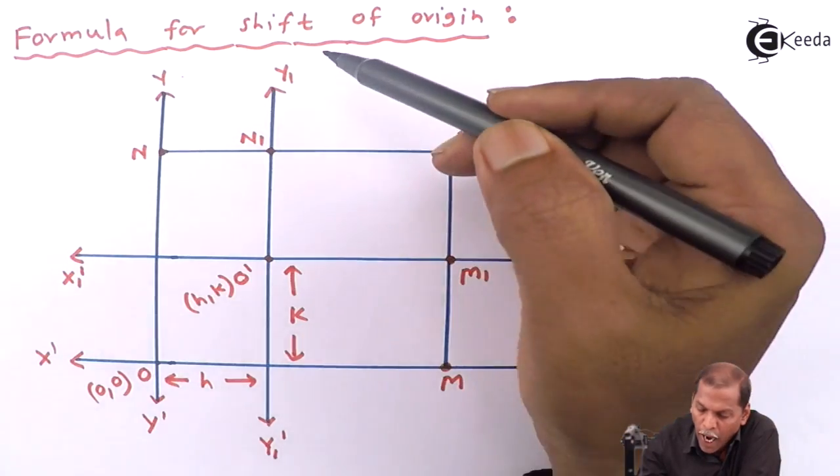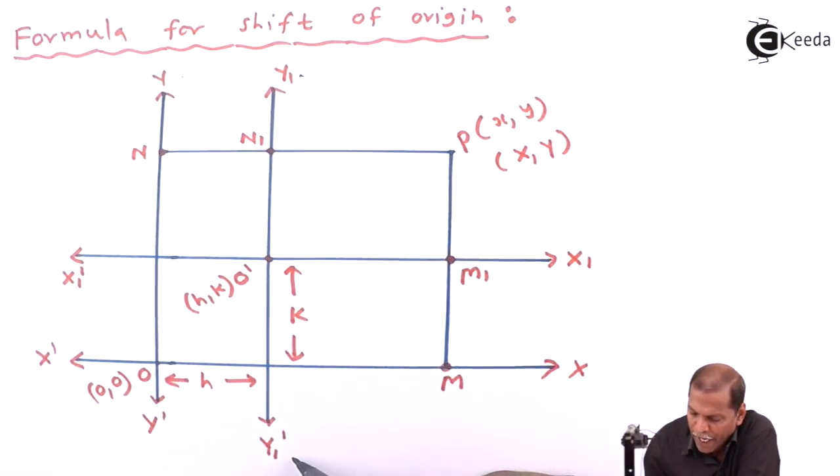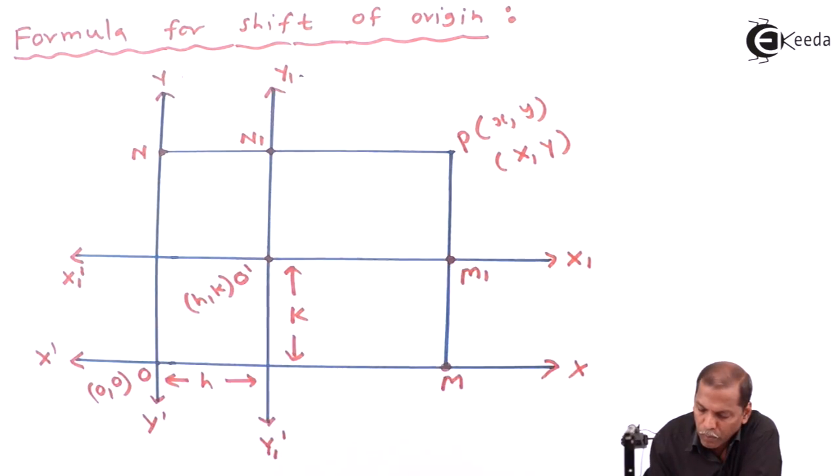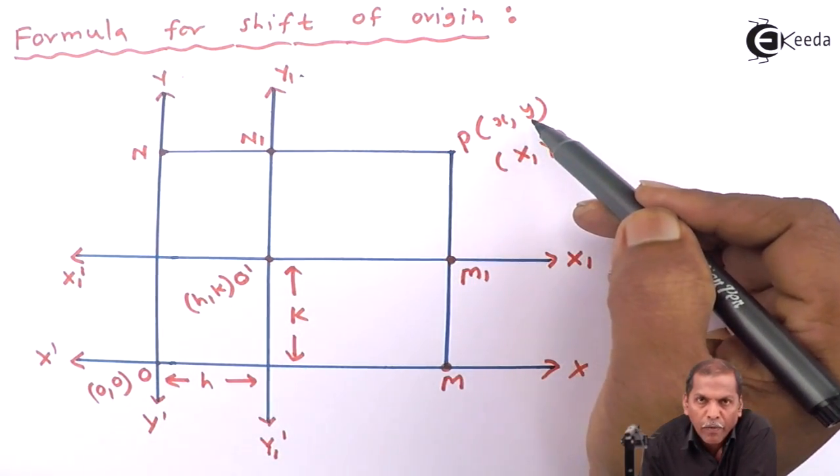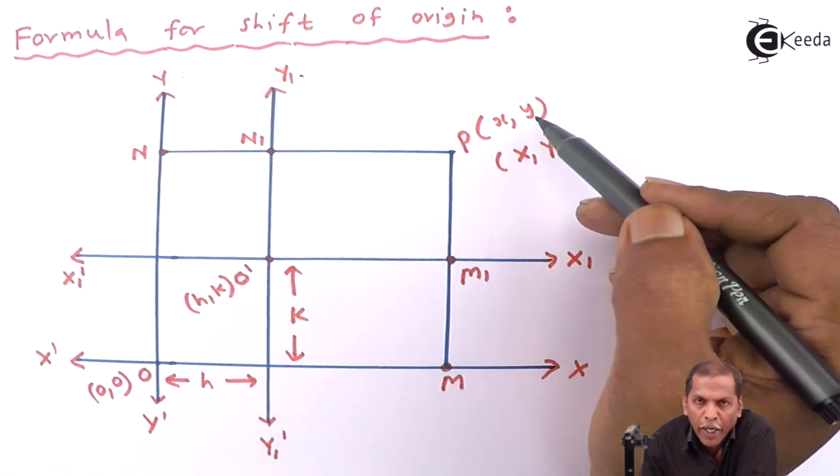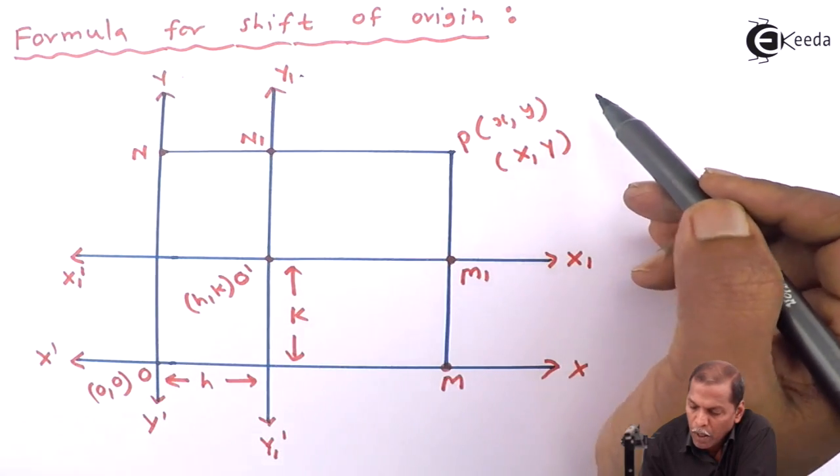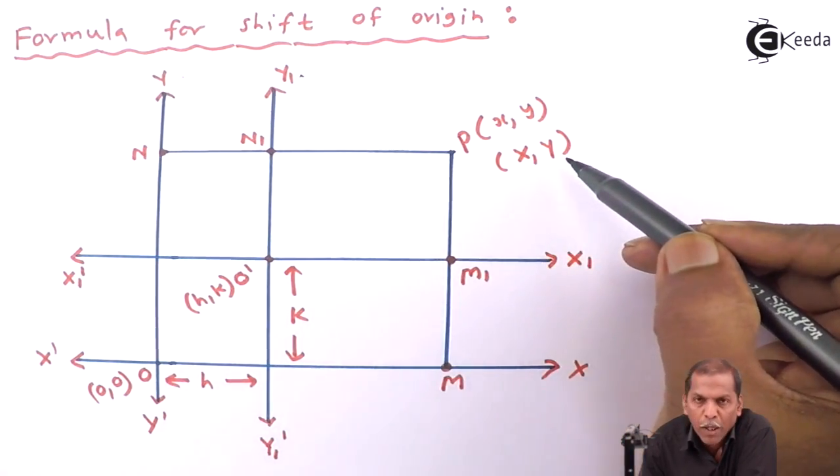Then let P(x,y), which are called old coordinates of a point in the xy plane, and at the same time P(X,Y), which are called new coordinates of point P.